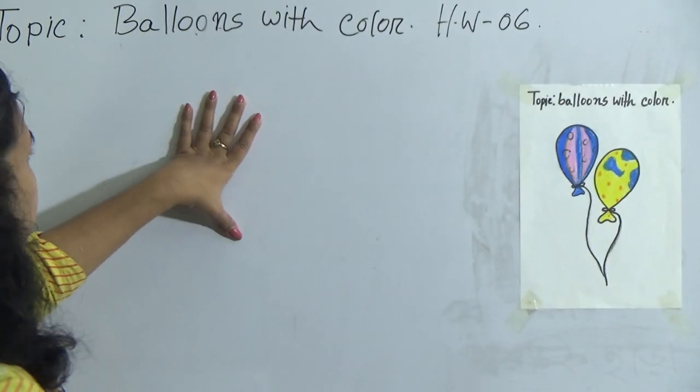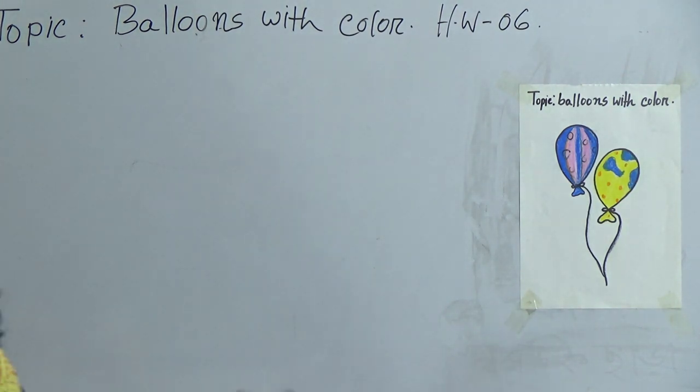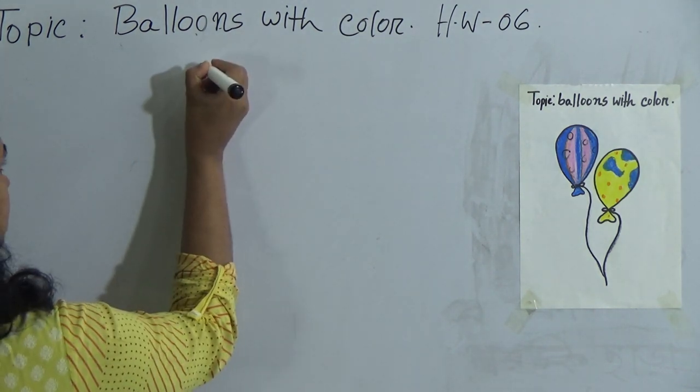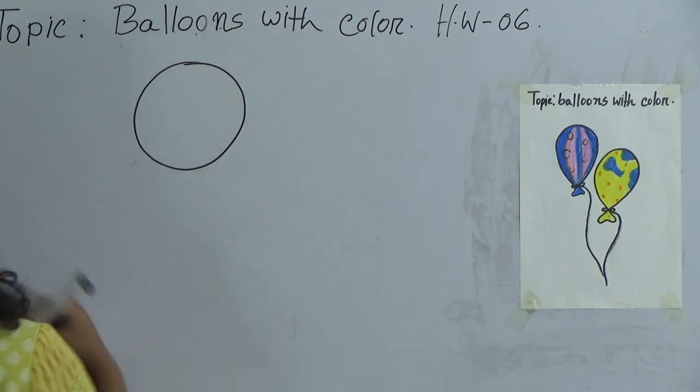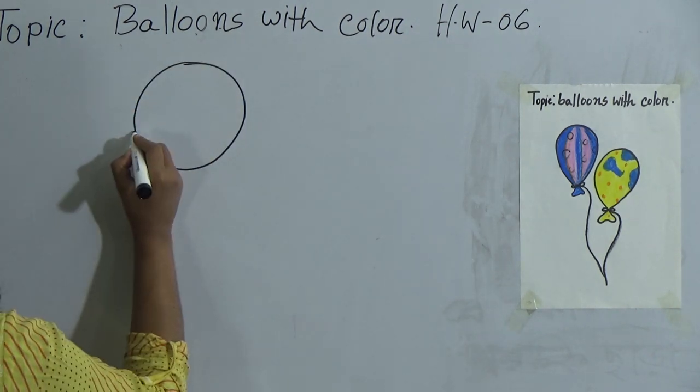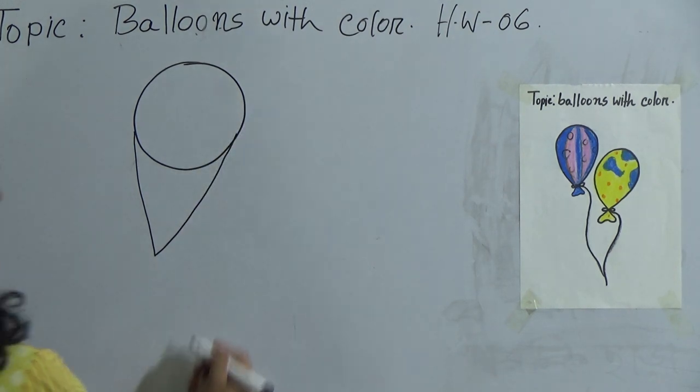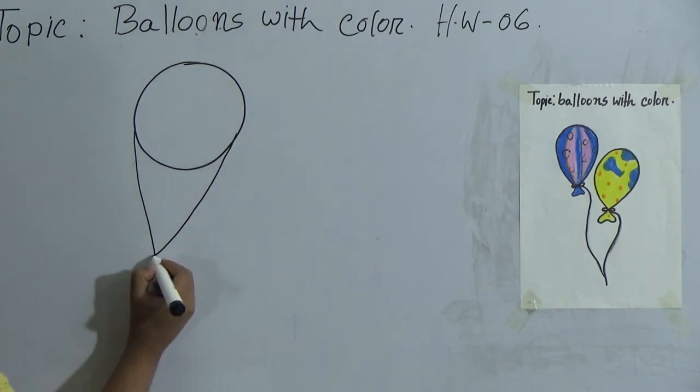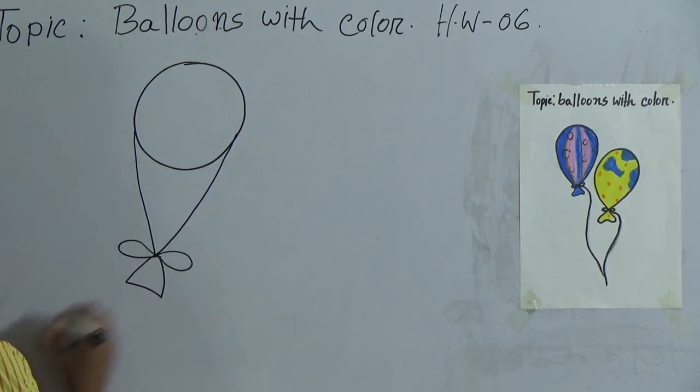Now, all of you know how to draw a circle. From the circle we learn how to draw balloons. First, draw a circle. Then give a V. Then use this type of triangle and the lines to make a balloon.